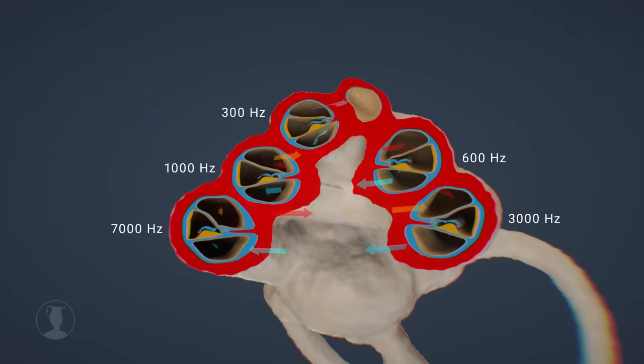Our ear covers a range from 20,000 to 20 Hz. It is almost impossible to believe, but at 20,000 Hz, the stapes performs 20,000 movements in only one second.